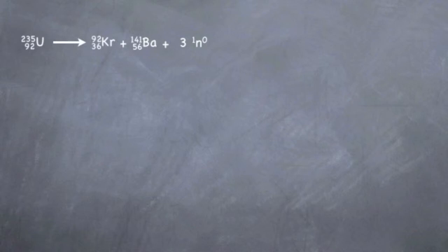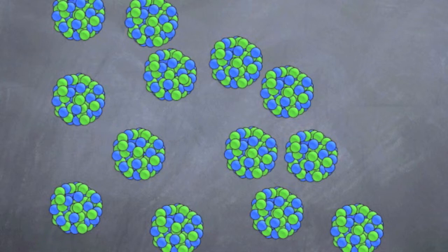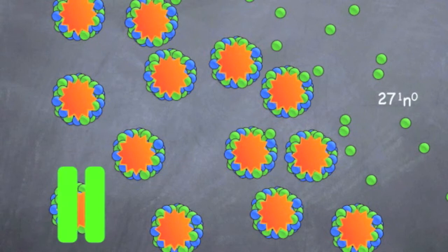That explosion can be put in a chain reaction, first one giving out three neutrons, then nine, then 27, and on and on.